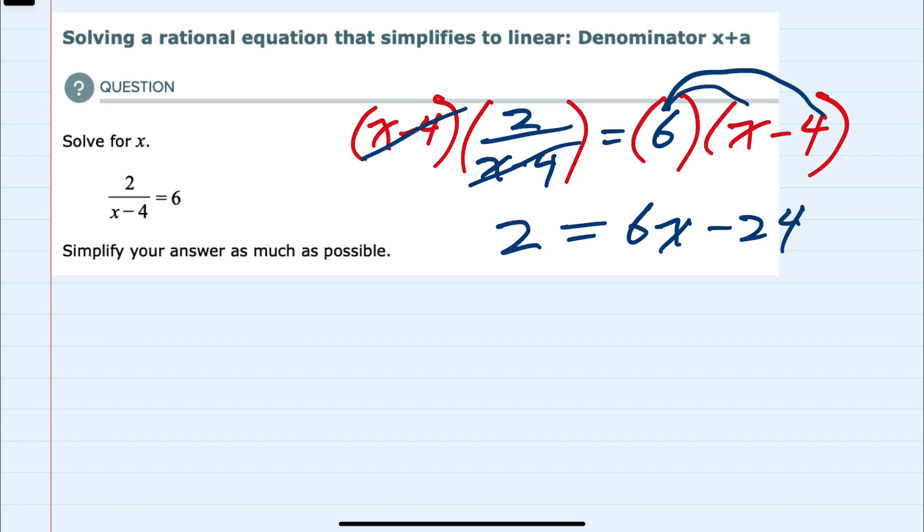This already looks much easier to solve because without any fractions and without the variable in the denominator, I can just isolate the x on the right hand side by first adding 24 to both sides, canceling the 24 and leaving me with 26 equals 6x.